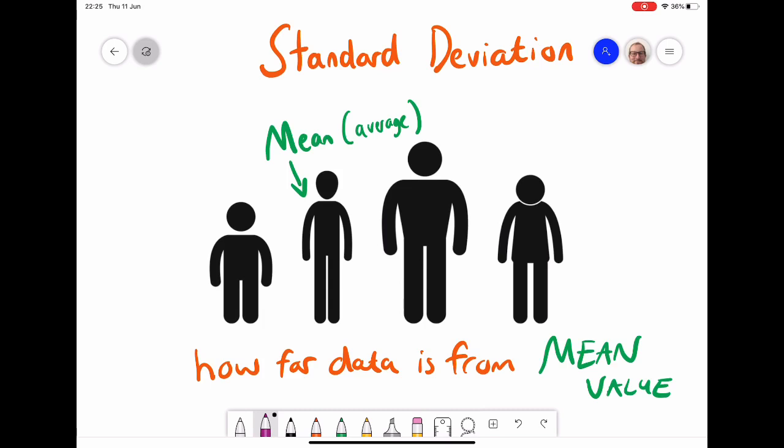If we had a large standard deviation then we would have lots of small and tall people and therefore the data set would deviate quite a lot from that average height. But if more people were similar height and not so many extremes of small and tall, then the data wouldn't deviate that much from that mean value.